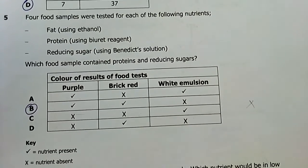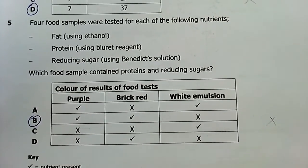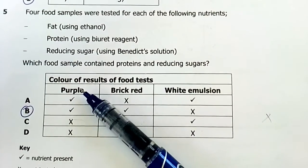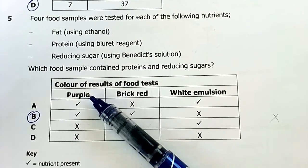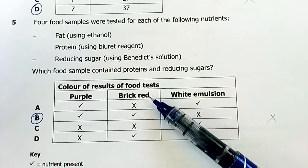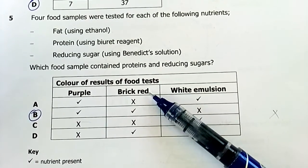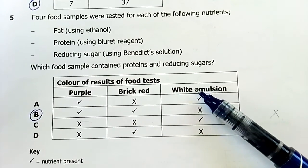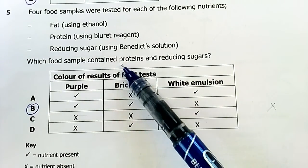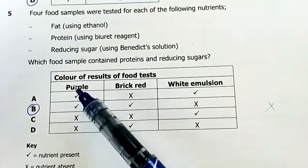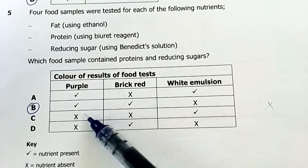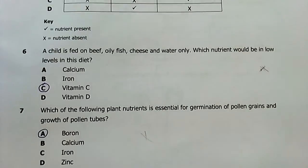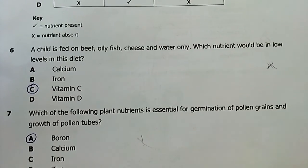Question five: four food samples were tested for each of the following nutrients—fats, proteins, reducing sugars. Purple is for proteins after the biuret test, brick red is for reducing sugars after the Benedict test, white emulsion is for lipids after the emulsion test using ethanol. Which food sample contains proteins and reducing sugars? Purple has to be present and brick red has to be present. This is B.